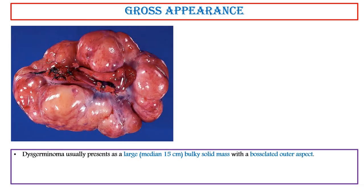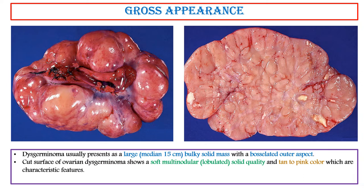Gross appearance. Dysgerminoma usually presents as a large, median 15 cm, bulky solid mass with a lobulated outer aspect. The cut surface shows a soft, multinodular, lobulated, solid quality and tan-to-pink color, which are characteristic features.